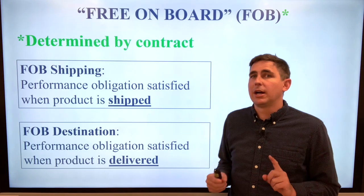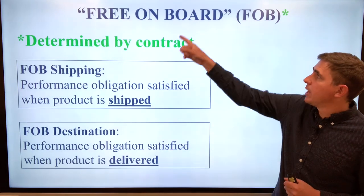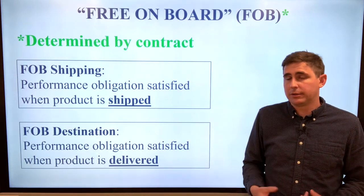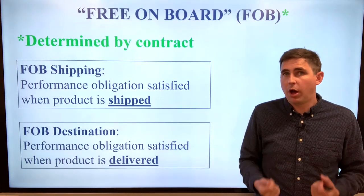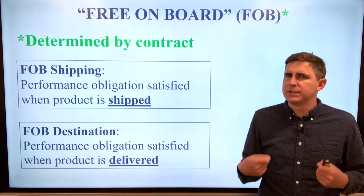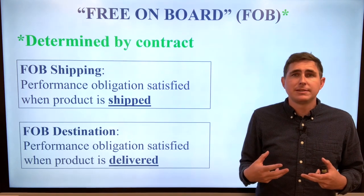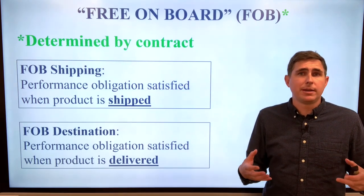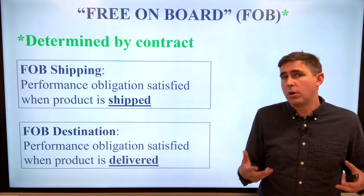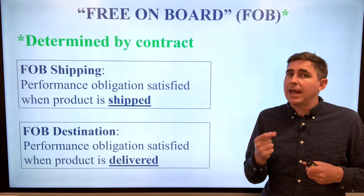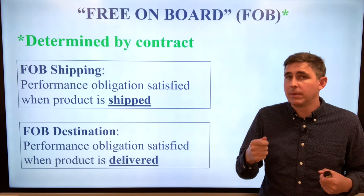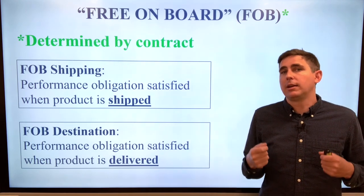This is going to be determined by a contract. Free on board, or FOB, is determined by contract. It'll be explicitly stated in the contract when risk of loss is transferred from the seller to the buyer. Risk of loss means if the product goes up in flames and is destroyed, who is responsible for that product — who owns it? That is the performance obligation, and it determines when the selling company can recognize revenue.